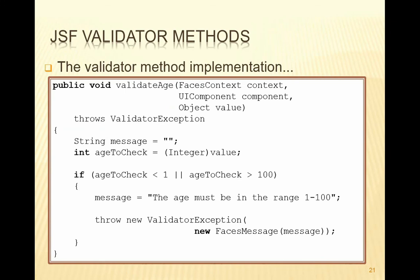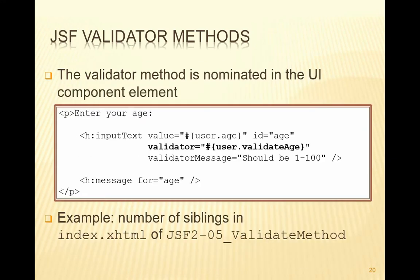The method will potentially throw a ValidatorException. We don't need to do Integer.parseInt because the object that comes in — the parameter called value — will already have been converted by the converter, so we know it's going to be of the right type, which is an integer. So we can cast value to an integer and store it in ageToCheck. Then we do our validation test: if ageToCheck is less than 1 or greater than 100 then it's out of range, so we set up a message and throw a new ValidatorException passing a new FacesMessage containing that message. The existence of that exception will trigger the abortion of the lifecycle, and the original view will be displayed using that error message, or the one on the validatorMessage attribute.